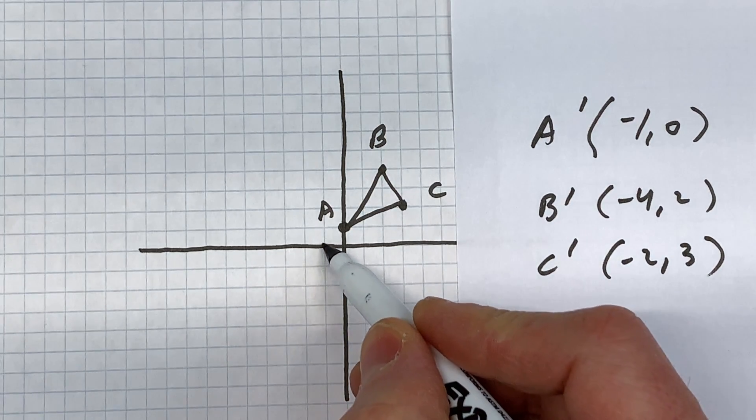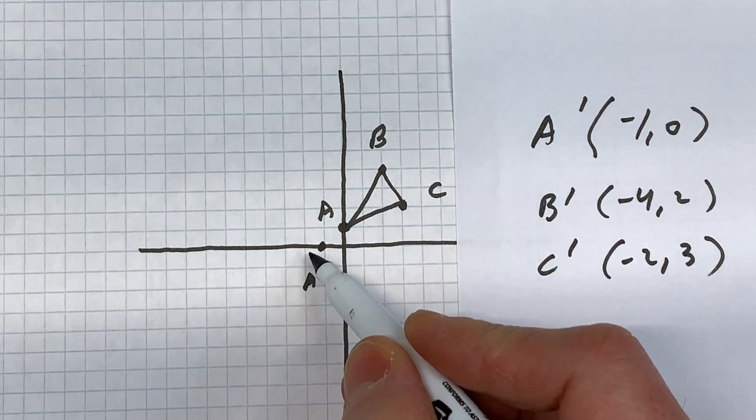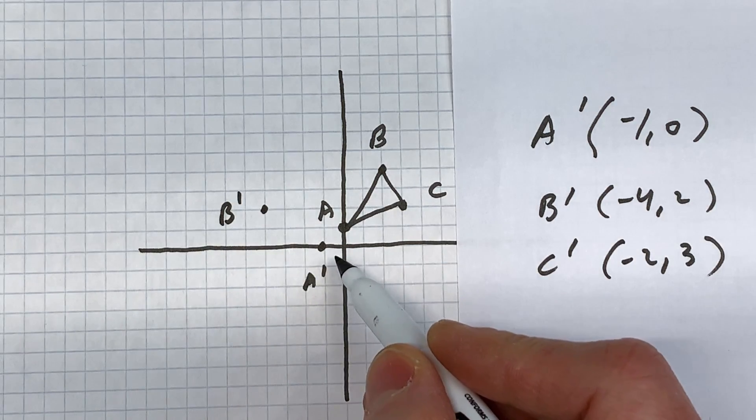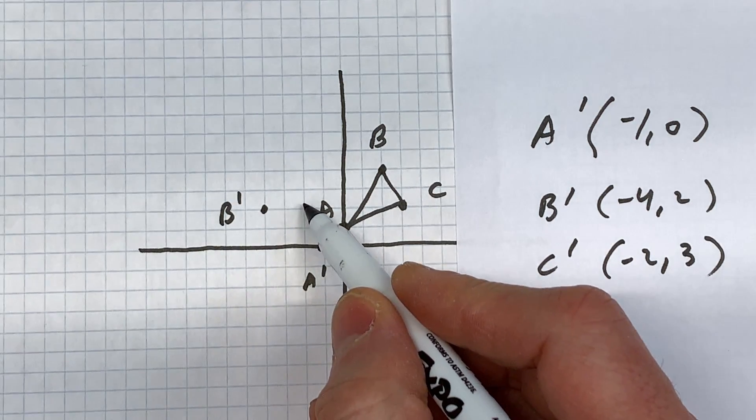So negative one, zero is going to be here—that's our A prime. B prime is at negative four, two. That's our B prime. C prime is at two, three.